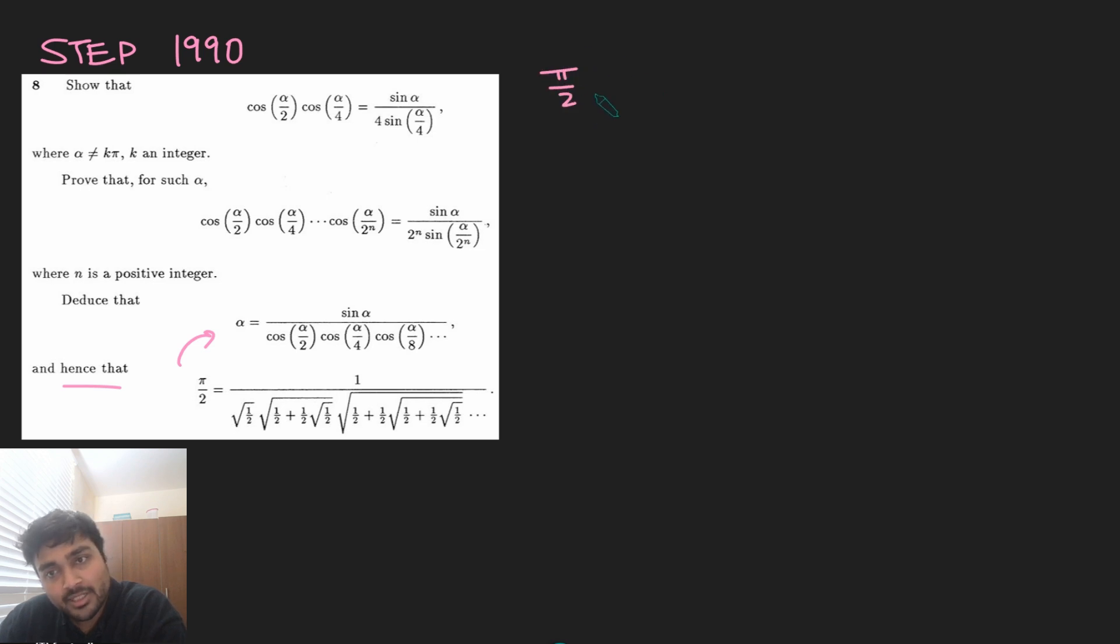So we get pi by 2 is sine of pi by 2, which is just 1, all divided by this weird product here. So we've got cosine of pi by 4, cosine of pi by 8, cosine of pi by 16, and so on. So we want to... Oh, sorry, not pi. So cosine of pi by 4, pi by 8, pi by 16, and so on. So all the powers of 2.